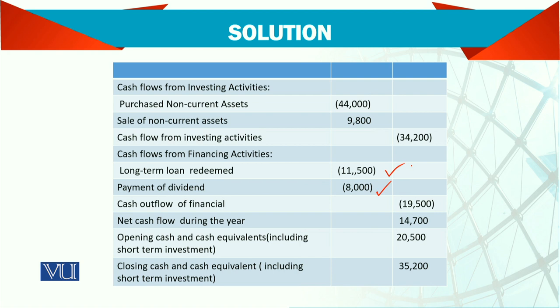The net cash flow during the year is positive 14,700. If you add to it the opening balance of cash and short-term investments combined, the total is 20,500. So the closing balance is cash plus short-term investments. When we have short-term investments, we put them together.